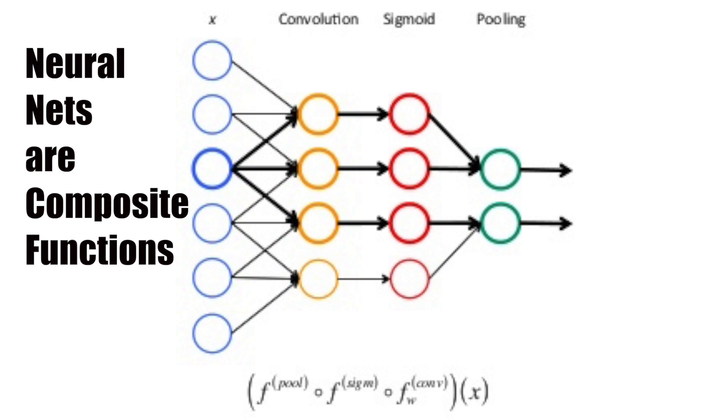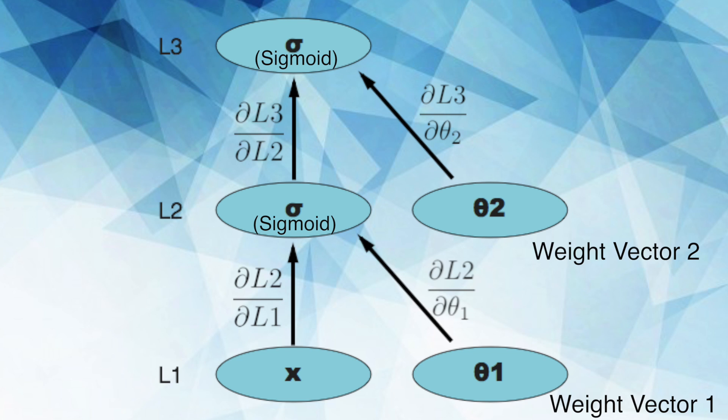A neural network is essentially a massive nested composite function. Each layer of a feedforward neural network can be represented as a single function whose inputs are a weight vector and the outputs of the previous layer. The purpose of backpropagation is to figure out the partial derivatives of our error function with respect to each individual weight in the network so we can use those in gradient descent.